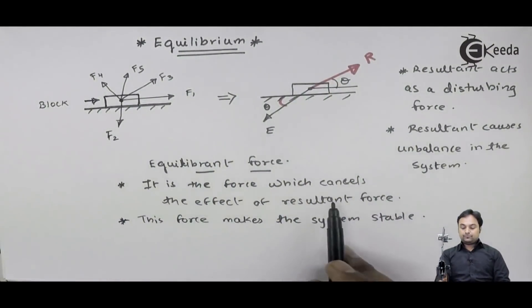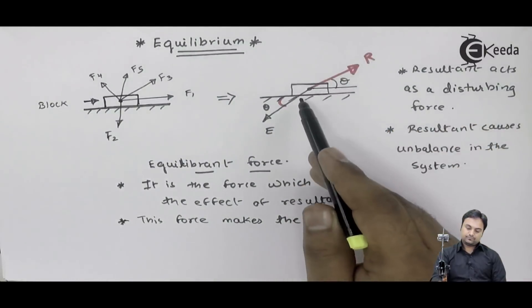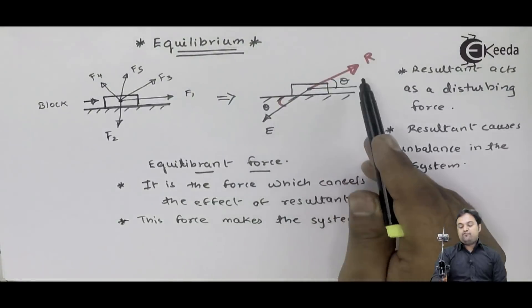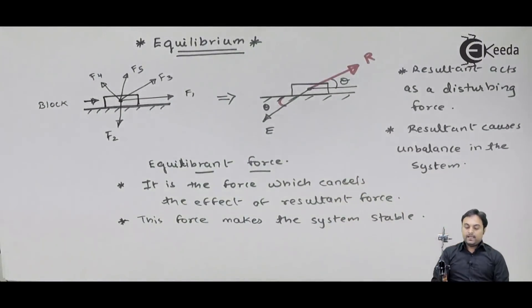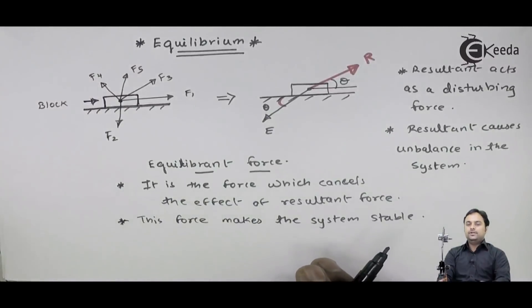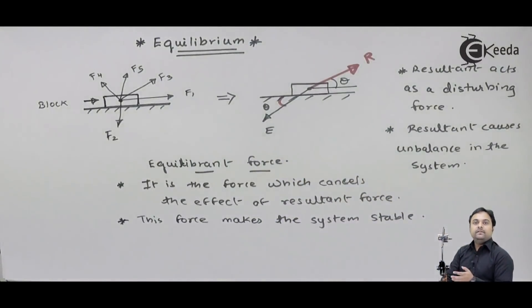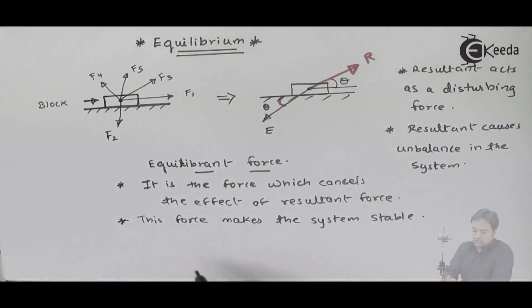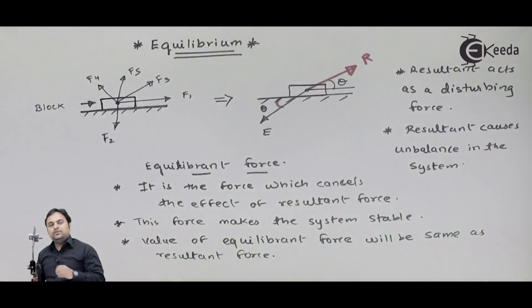Equilibrium force is that force which cancels the effect of resultant. In this diagram, the resultant is acting upward and the equilibrium force is in the downward direction. Since both values are the same but the nature is different, equilibrium force will cancel out the resultant force. Because of the resultant, this block was moving — it was disturbed. Because of the equilibrium force, that block would be brought back to its initial state. So equilibrium force acts as a stable force which makes a system of forces stable. Values will be the same, but the nature of the resultant force and the equilibrium force would be different.